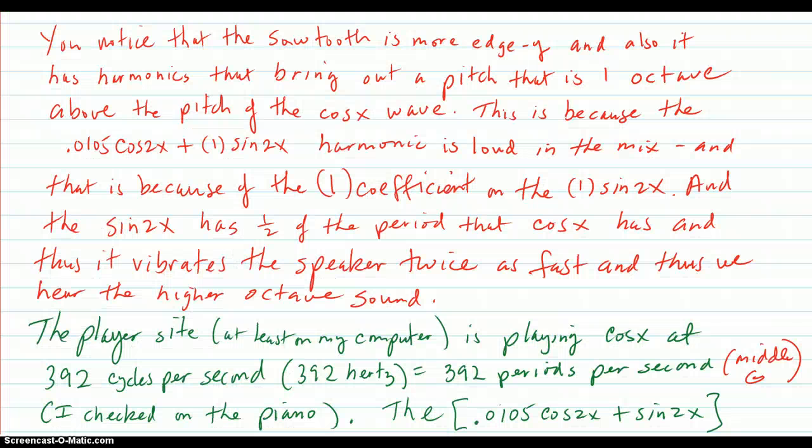So you notice that the sawtooth is more edgy. It has more character. And also it has harmonics that bring out a pitch that's one octave above the pitch of the cosine x wave. This is because you have this harmonic present in the Fourier polynomial.